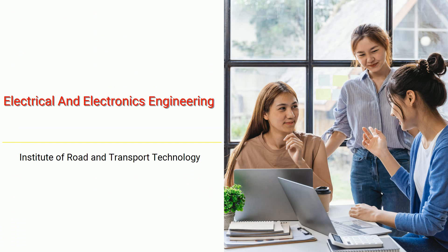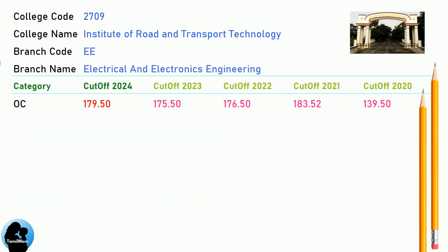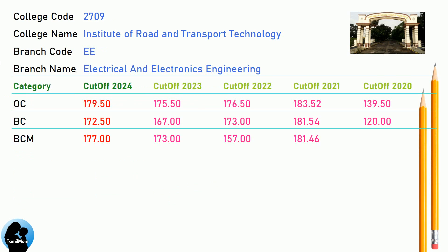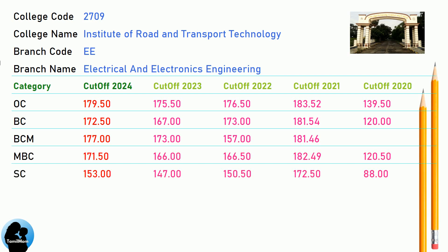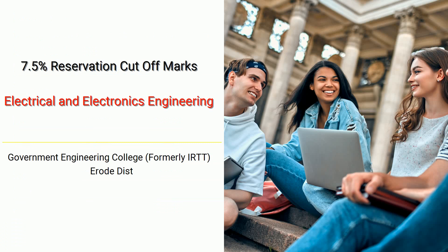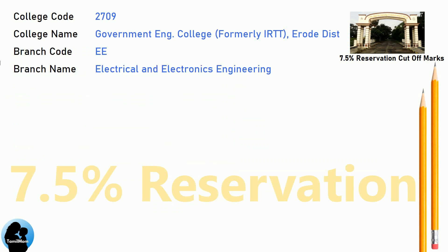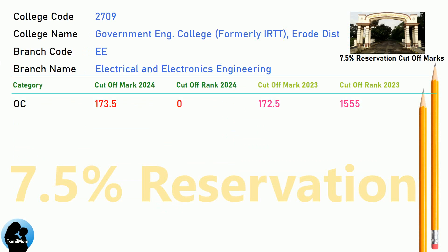DNA Cut-Off for Institute of Road and Transport Technology in Electrical and Electronics Engineering. DNA 7.5 Reservation Cut-Off for Government Engineering College, formerly IRTT, Erode District in Electrical and Electronics Engineering.